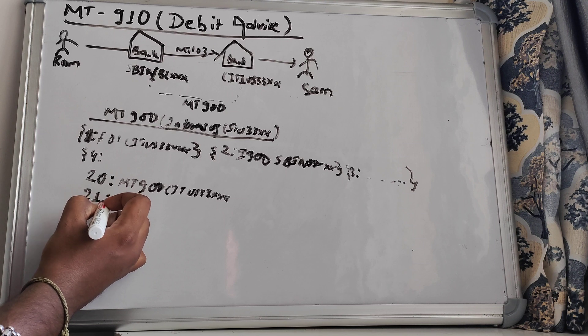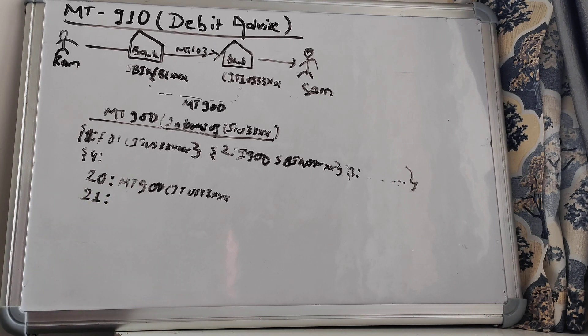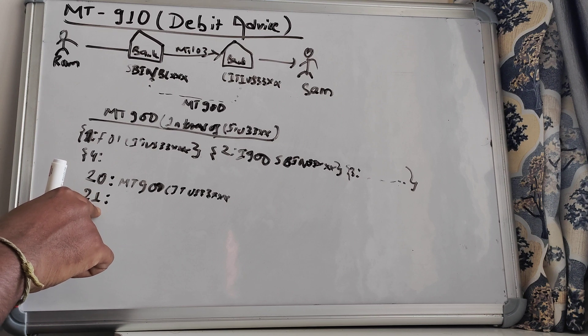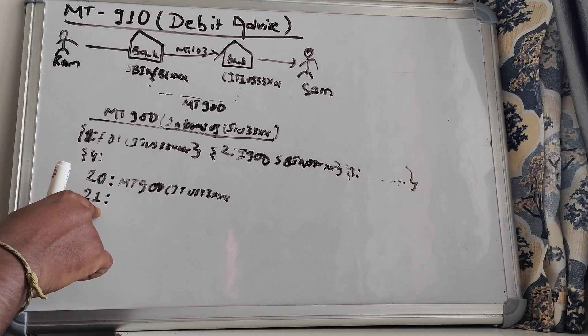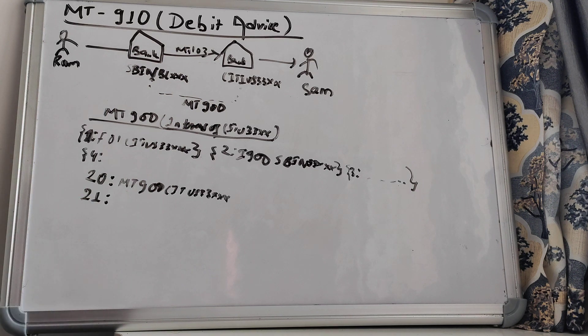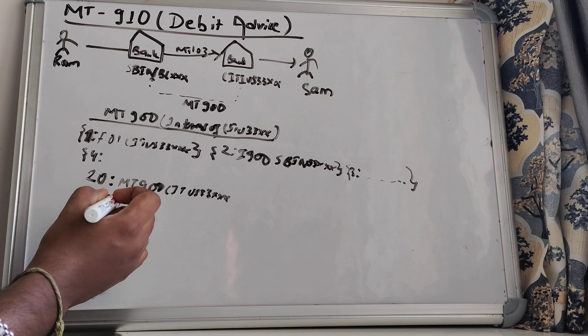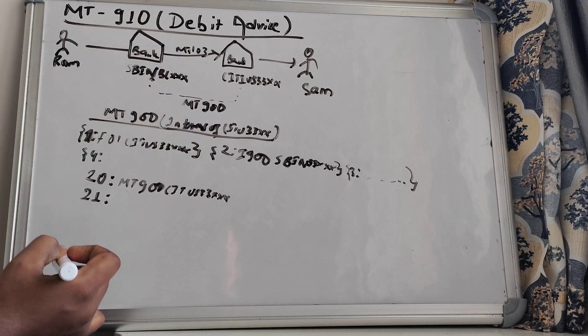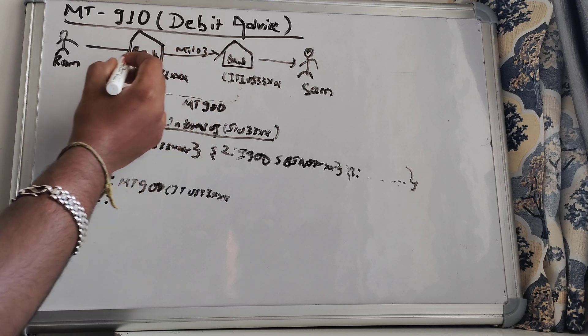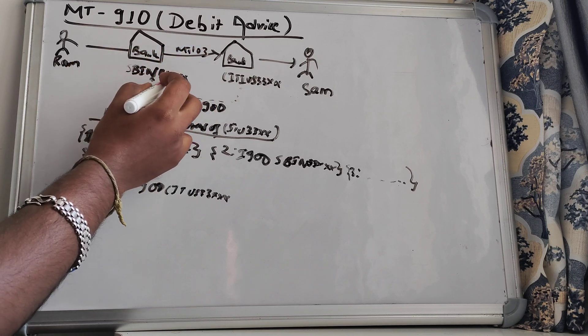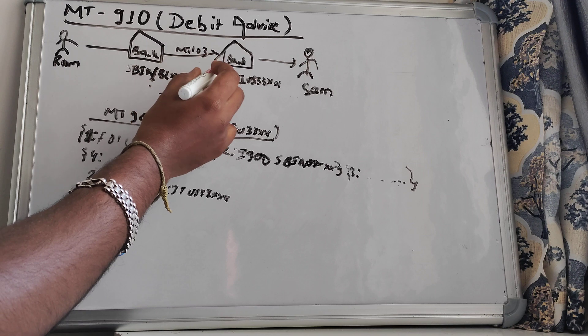And there will be a related reference number. Now this is very important to understand. Tag 21 is very important. Related reference number - this is nothing but the original transaction reference number of MT-103. So as I said, this tag 21 will be the original transaction reference of MT-103.